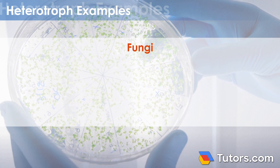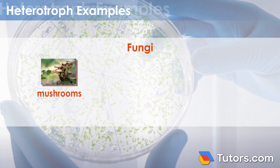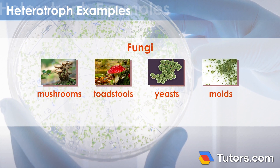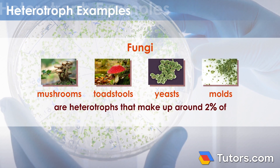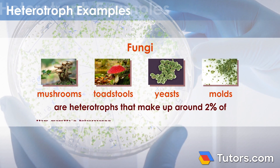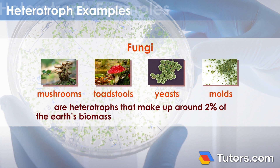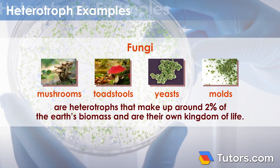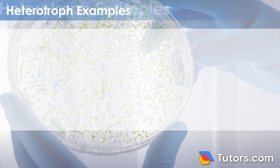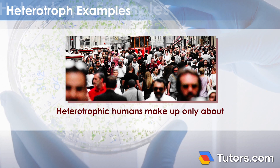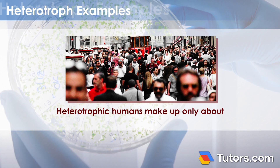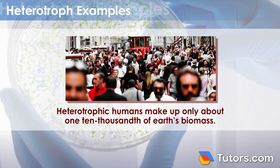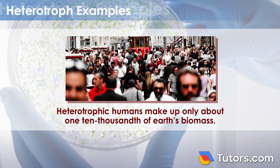Fungi — mushrooms and toadstools, yeasts, and molds — are heterotrophs that make up around 2% of the Earth's biomass, and are their own kingdom of life. By contrast, heterotrophic humans make up only about 1 ten-thousandth of 1% of Earth's biomass.